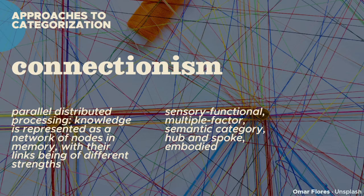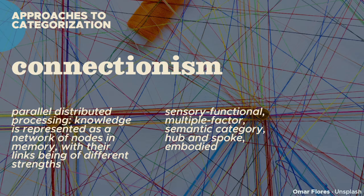Meanwhile, connectionism — or parallel distributed processing — was developed through insights from computer science and neuroscience to help us understand how we process knowledge at the level of neurons. These models more or less follow the hierarchical structure assumed by semantic networks, but add weights to the links between nodes to indicate the strength of their connections. Concepts are processed across large networks of neurons in terms of dimensions such as living vs. non-living, as in the sensory-functional hypothesis; large libraries of properties and attributes, as in the multiple factor approach; survival value, as in the semantic category approach; or activation of integrated brain areas, as in the hub-and-spoke model and the embodied approach.